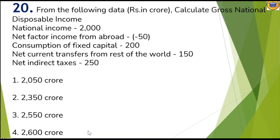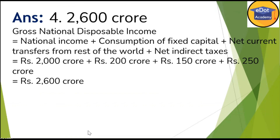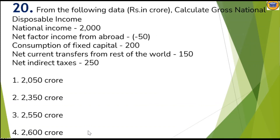Last question: calculate the Gross National Disposable Income from the following data — National Income 2000, Net Factor Income from Abroad, Consumption of Fixed Capital, Net Current Transfer from Rest of the World, and Net Direct Taxes. Since they are asking for gross income — not net — you add the Consumption of Fixed Capital, Net Current Transfer from Rest of the World, and Net Direct Taxes to National Income. Adding 2000, 250, and other values gives 2,600 crore. So option four is correct.